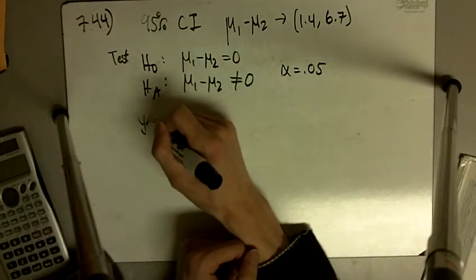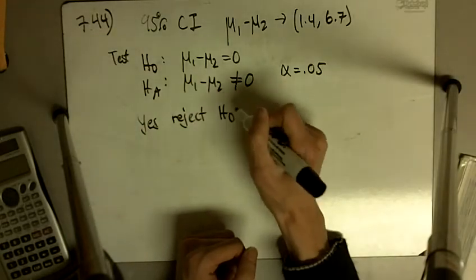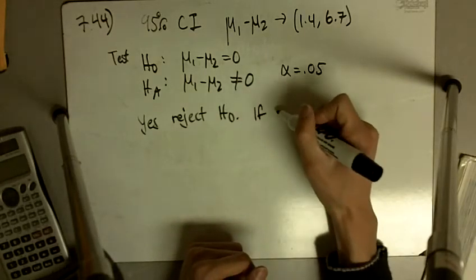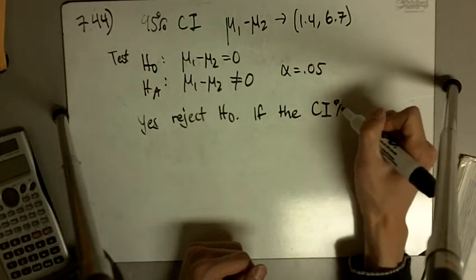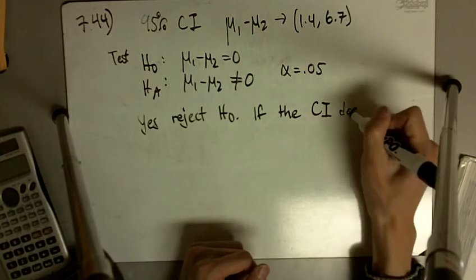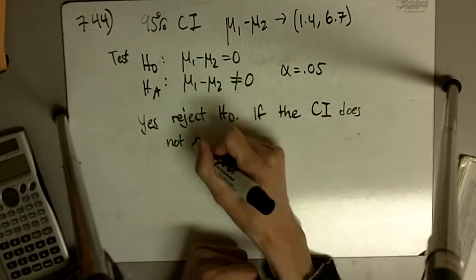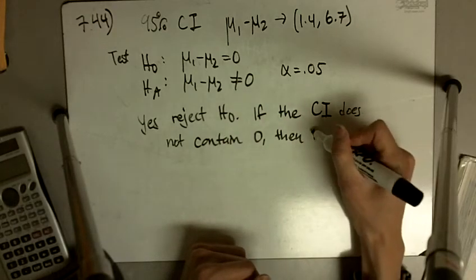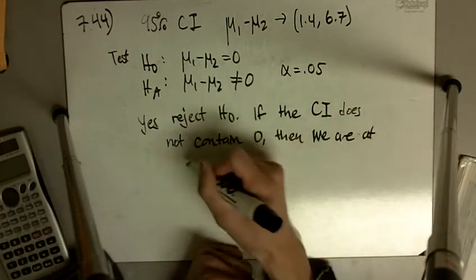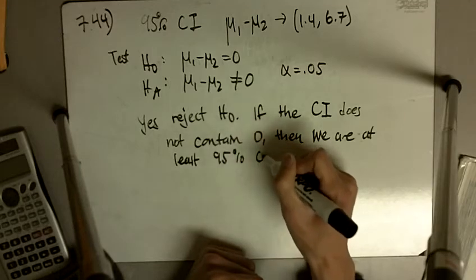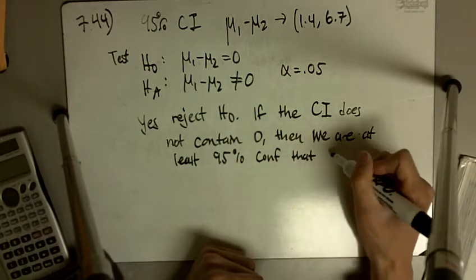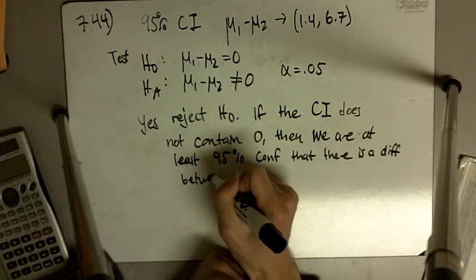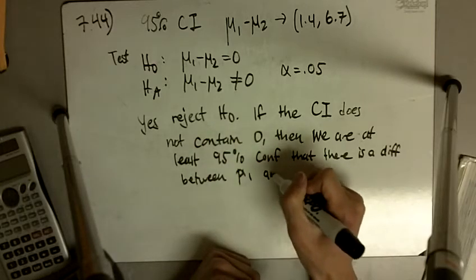And the answer is yes, we reject H₀. The simple reason is if the confidence interval does not contain 0, then we are at least 95% confident that there is a difference between μ₁ and μ₂.